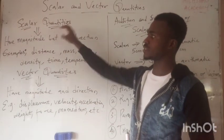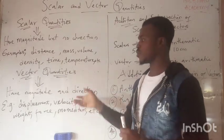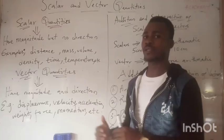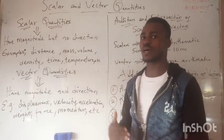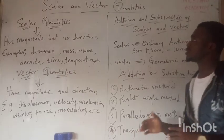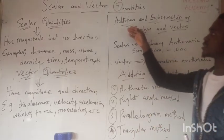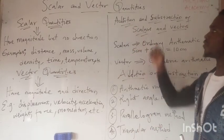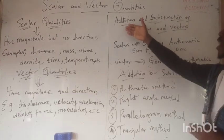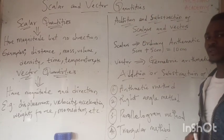They all fall under the vector quantities. The difference between the two is that scalars have magnitude but no direction, while vectors have both magnitude and direction. Now, how do we add and subtract scalar and vector quantities?